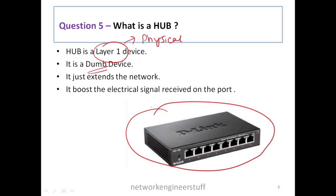Whenever a signal comes to one port on a hub, it boosts it and forwards it to all ports. It has no intelligence, which is the reason we call it a dumb device. Switches, routers, firewalls, and load balancers have intelligence — they decide where to forward data. A hub doesn't have that intelligence; it just boosts the electrical signal received on a port and nothing else.